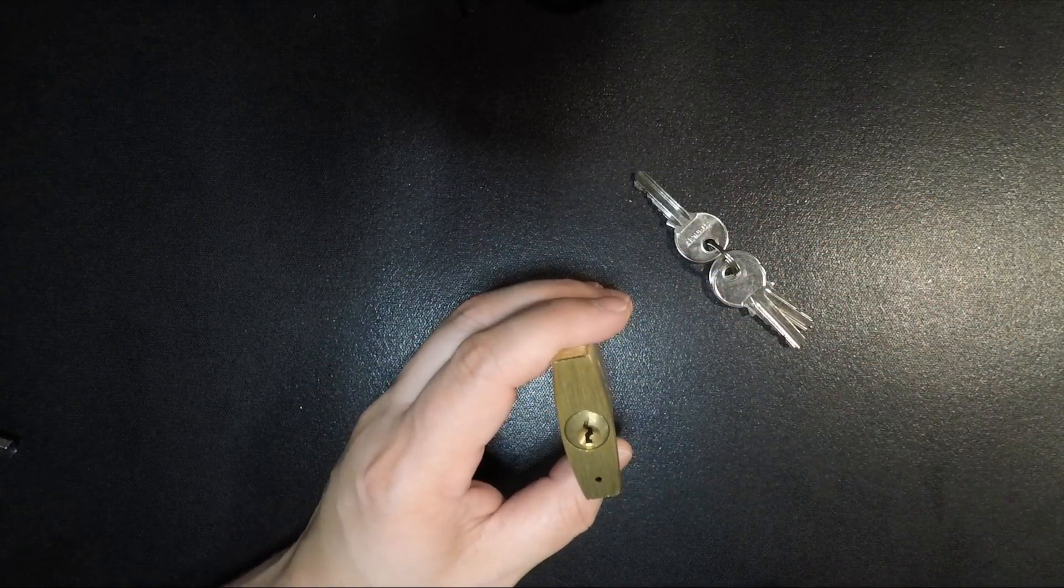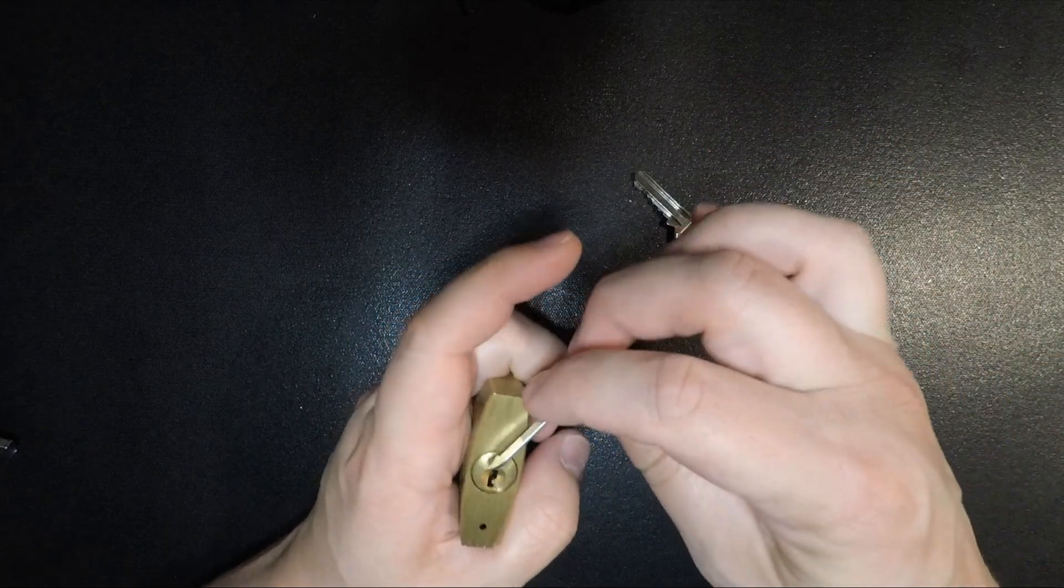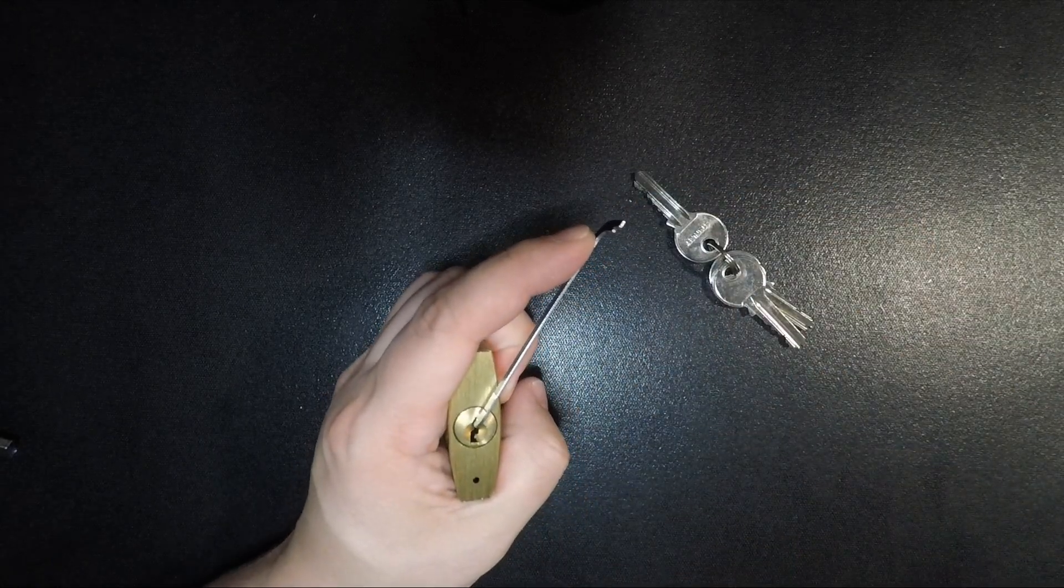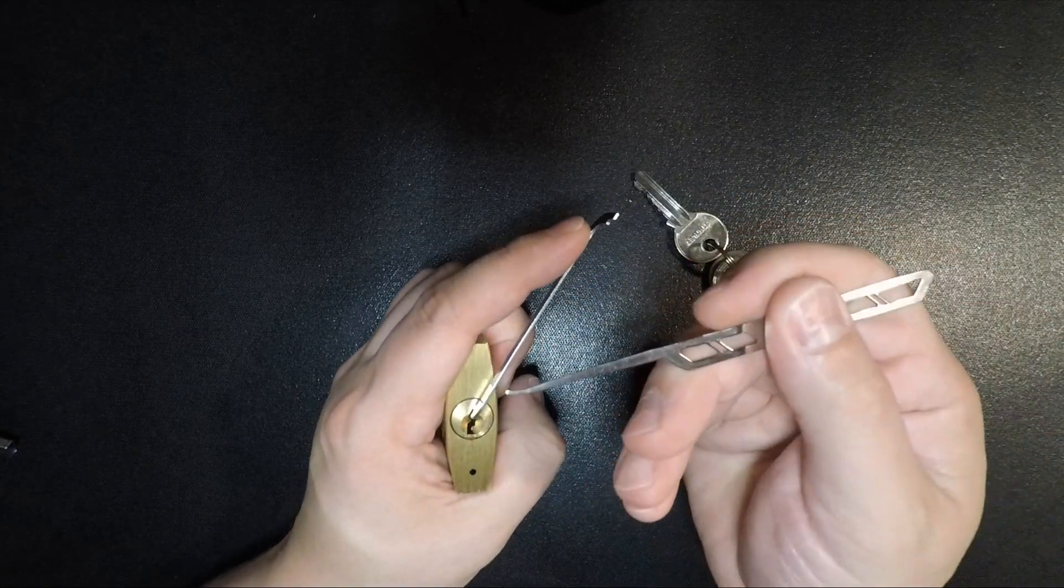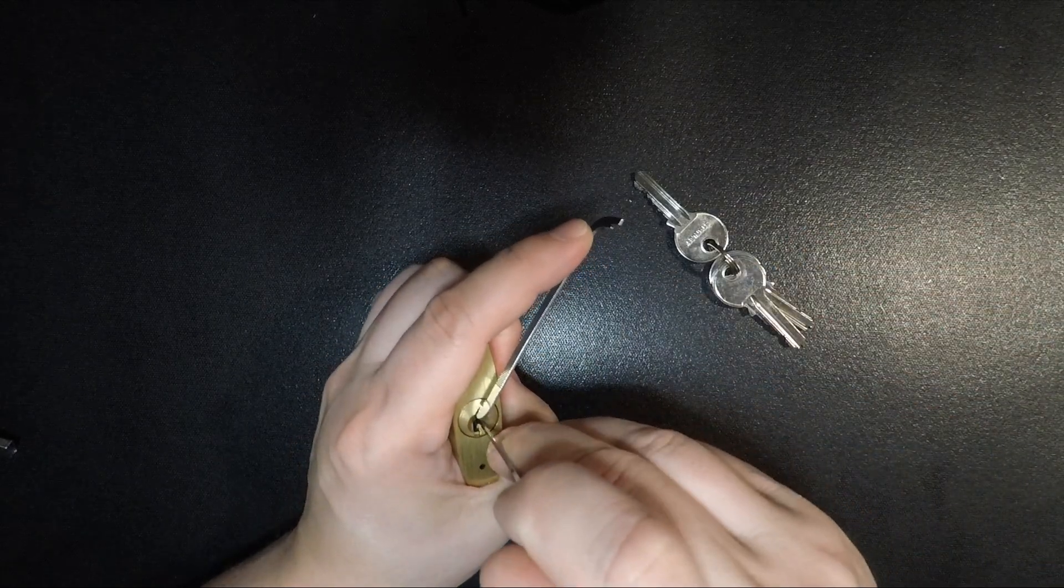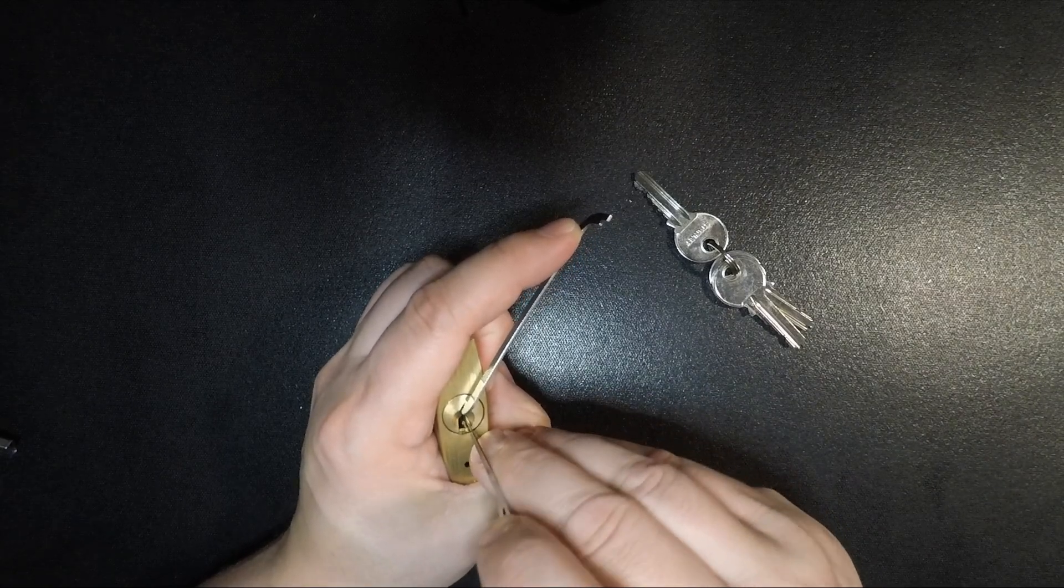So to pick this, I am going to use a top-of-the-keyway tensioner in 32 thousandths, just slide that right into that little curly area of the keyway, and also my Sparrow's Tron pick in 25 thousandths or whatever the default width for those picks are. Let's go ahead and get started.